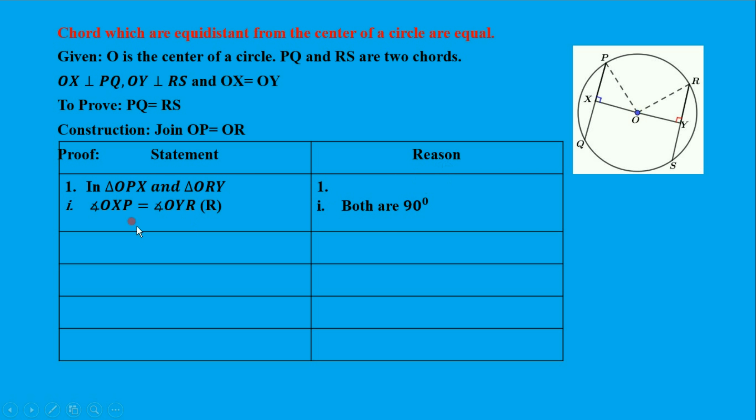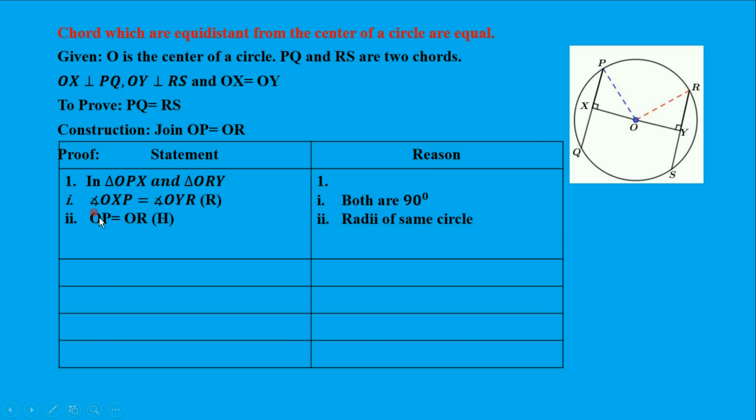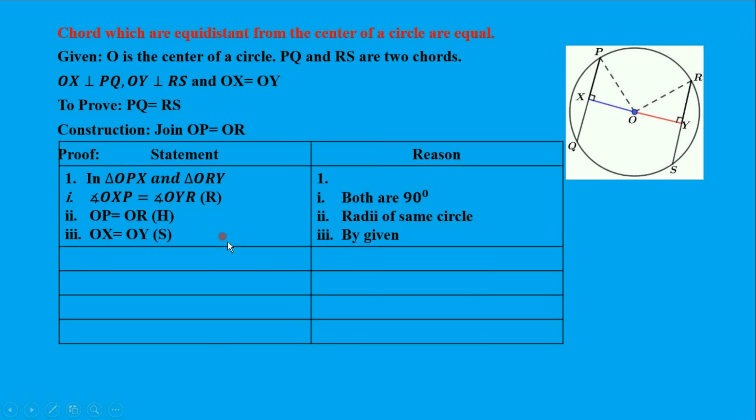Proof: Consider two triangles OPX and ORY. First, angle OXP equals angle OYR. Both are 90 degrees. Second, OX equals OY, which is given. Then by RHS axiom, triangle OPX is congruent with triangle ORY.